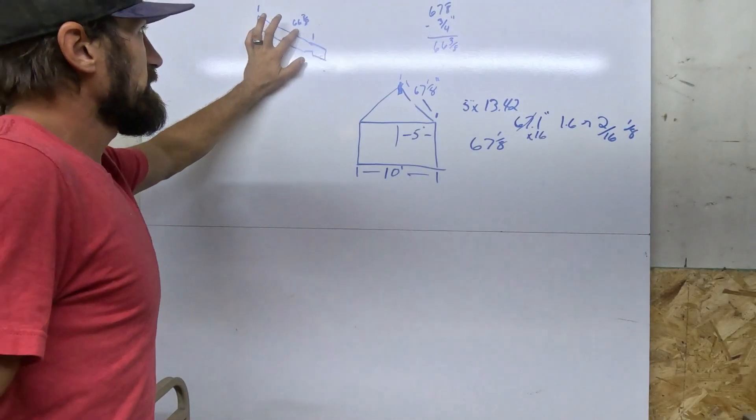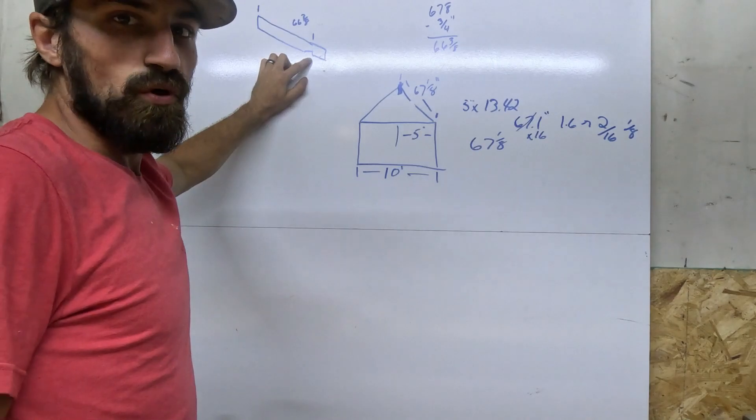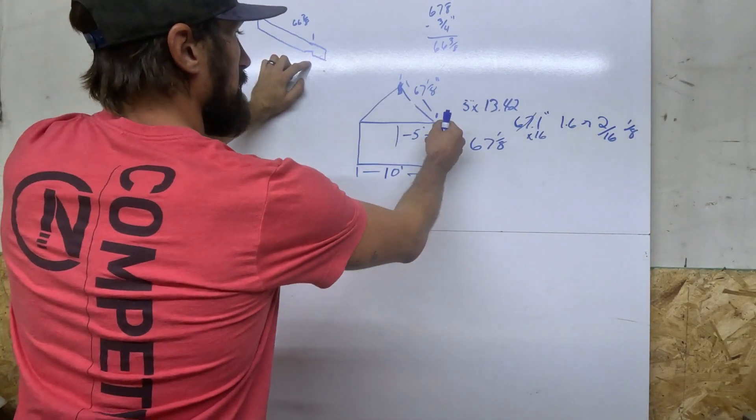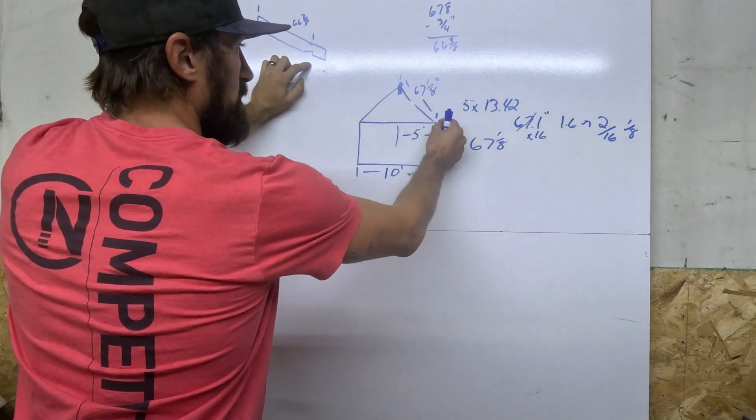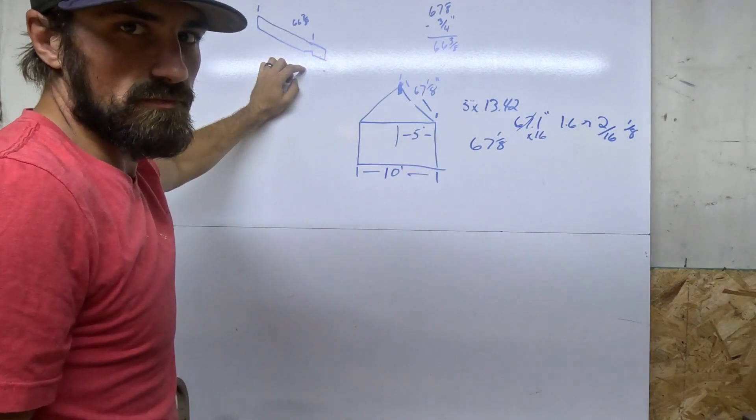That gives us 66 and three-eighths inches — that's where your bird's mouth is going to stop, at the outside point of the wall.